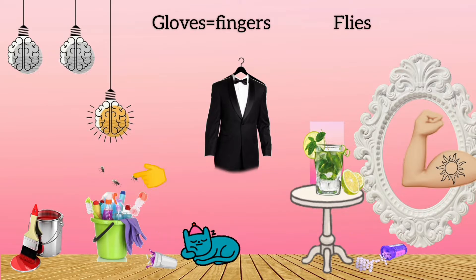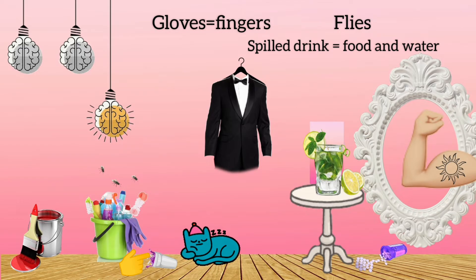There are flies over the bucket, and the cat has spilled a glass of drink, reminding you of food and water. These all represent the modes of transmission of Shigella: fingers, flies, food, water, and feces.